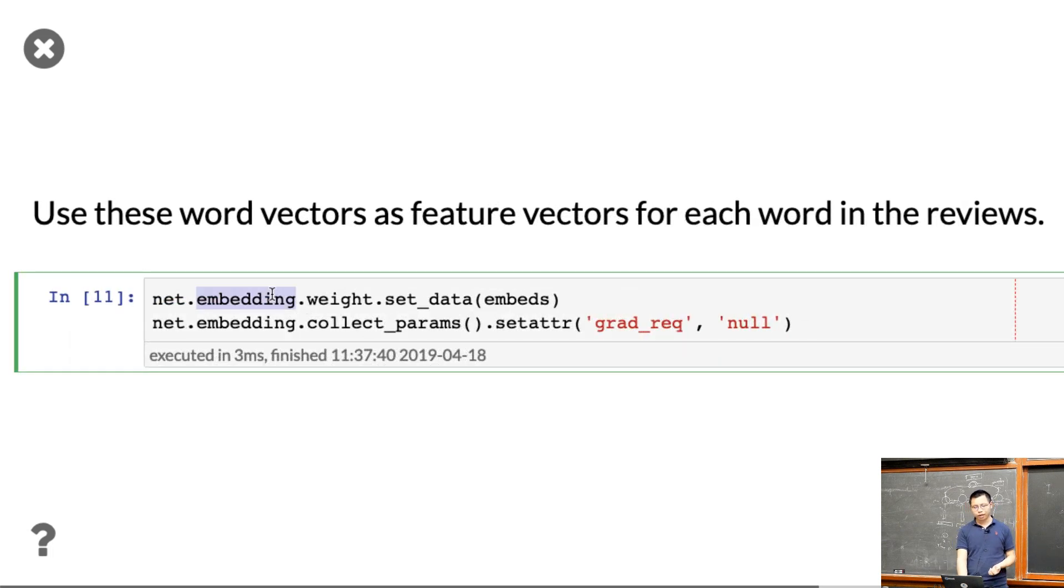The last thing we do: because we have an embedding layer, we just take the weight and set the data, replacing the randomly initialized weight we had before. The additional thing: we set the parameters of the embedding layer, set require gradients to be null, so we don't compute gradients. Which means we will not update the embedding layer. We just use this embedding layer for feature extraction.